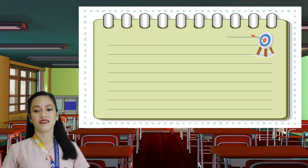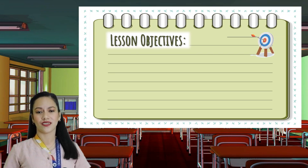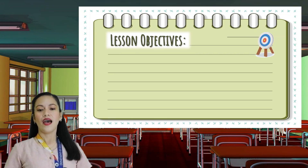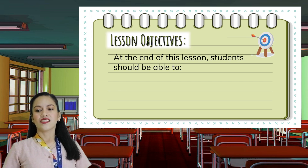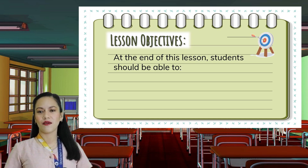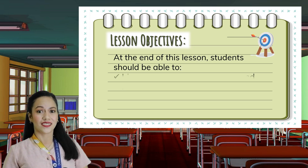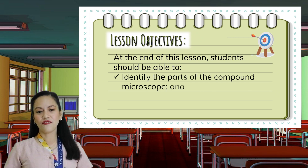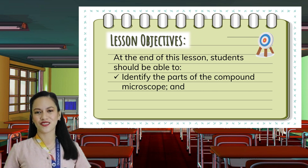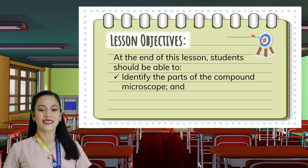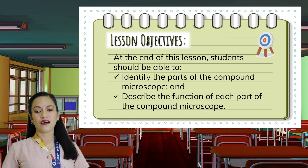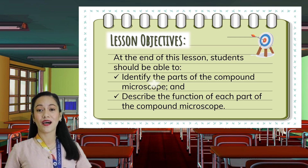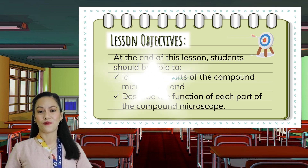And these are the learning objectives. At the end of this lesson, students should be able to: first, identify the parts of the compound microscope; and second, describe the function of each part of the compound microscope.